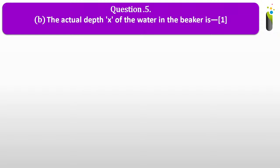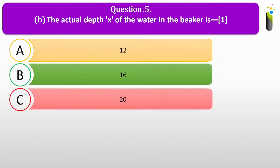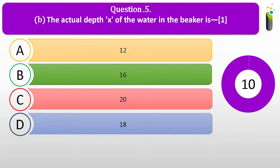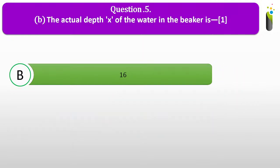The actual depth x of the water in the beaker is dash. A, 12; B, 16; C, 20; D, 18. The correct answer is 16.